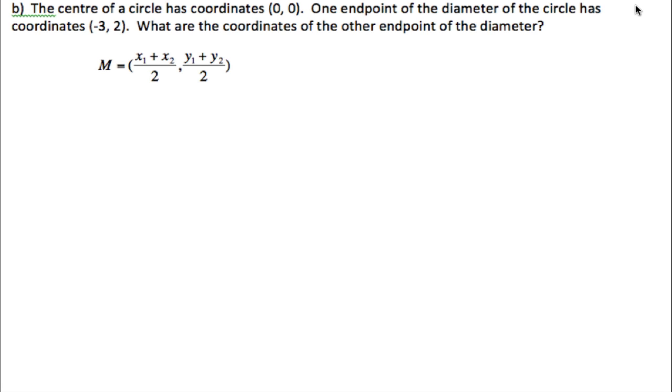For the next example, the center of a circle is 0, 0. So that is actually the midpoint. If you can imagine a circle, the center of the circle here is 0, 0. One end of the diameter is negative 3, 2. What is the other endpoint of the diameter?